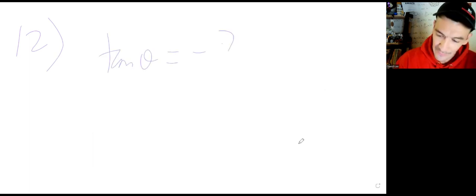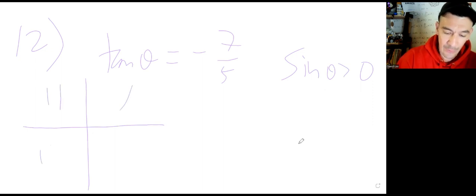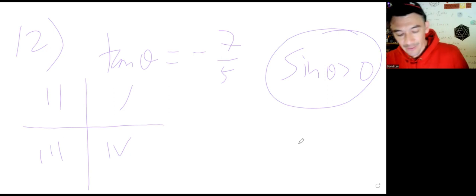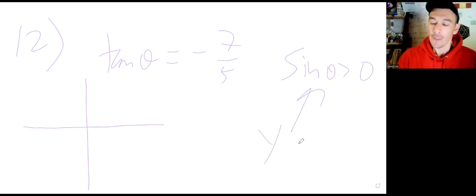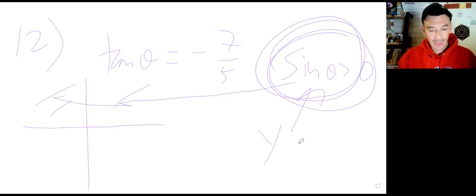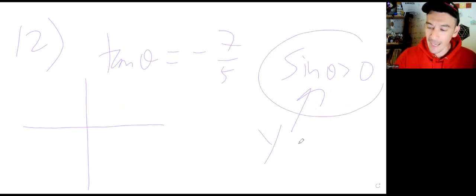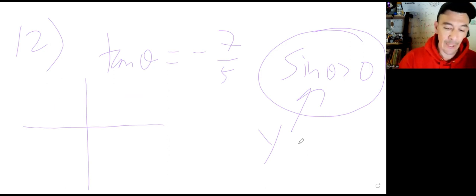Question 12: tangent of theta equals negative 7/5, and sine is positive. Since sine is affiliated with the y-coordinate, sine positive means we're in quadrant 1 or 2. Tangent is negative, and in quadrant 1 everything is positive, so by process of elimination we're in quadrant 2. In quadrant 2, your triangle should have the reference angle opening to the left.